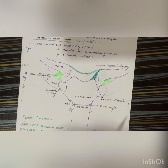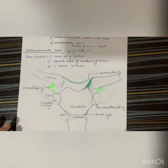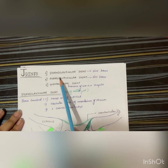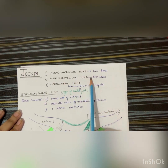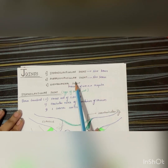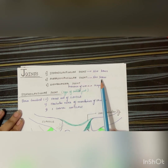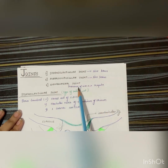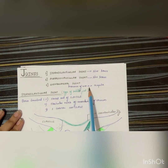Coming to the joints, there are three joints: the sternoclavicular joint, which links the clavicle to the sternum; the acromioclavicular joint, which connects the clavicle to the scapula; and then the glenohumeral joint, which connects the humerus of the arm with the scapula.